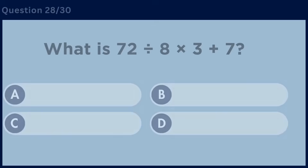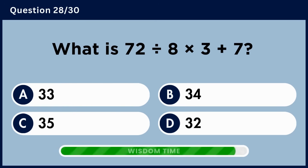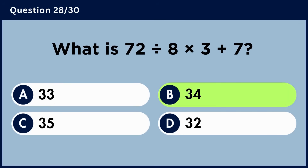What is 72 divided by 8 multiplied by 3 plus 7? Answer B: 34.